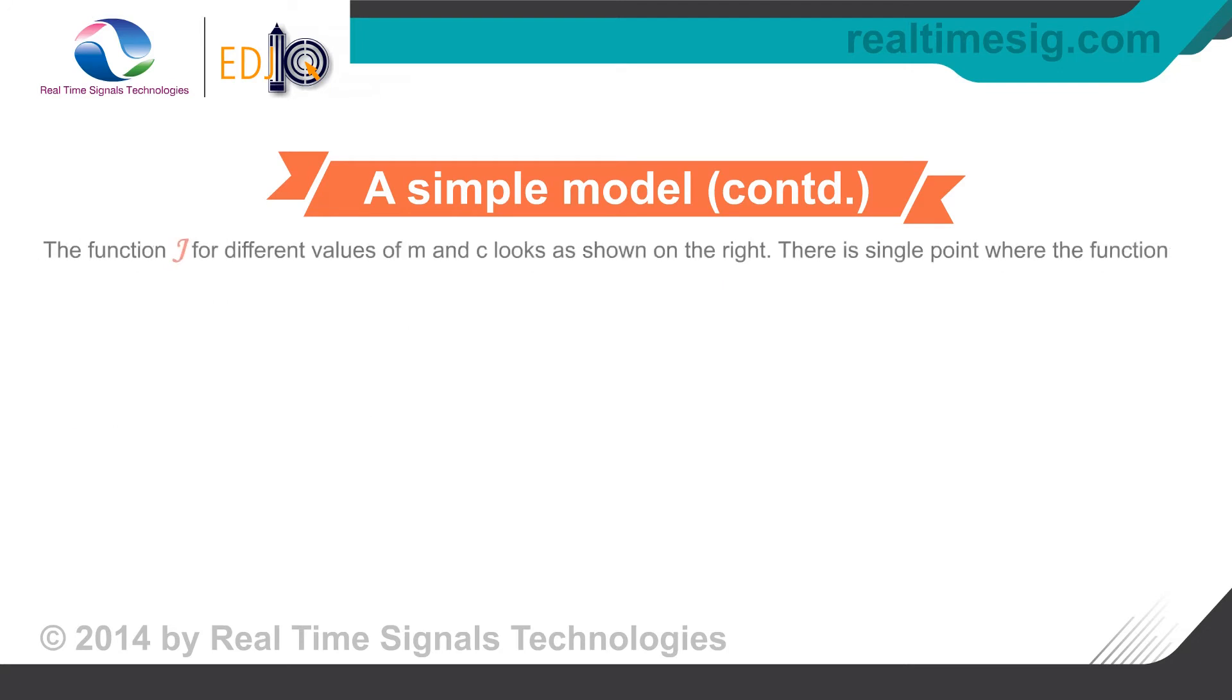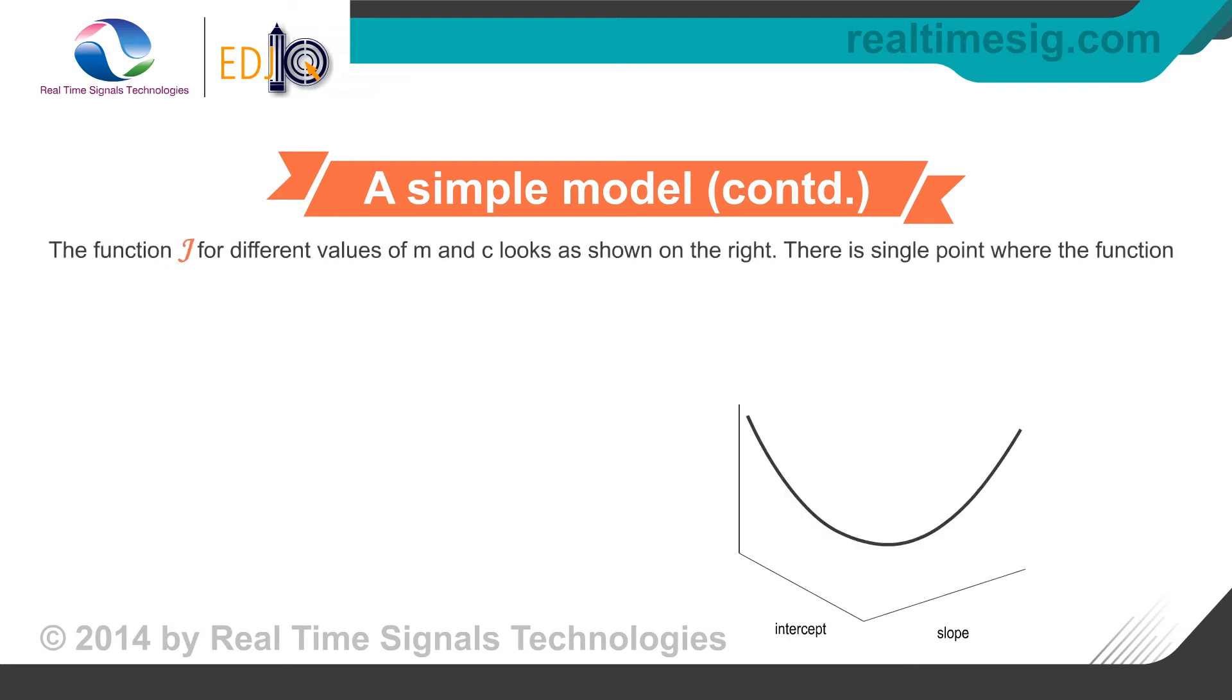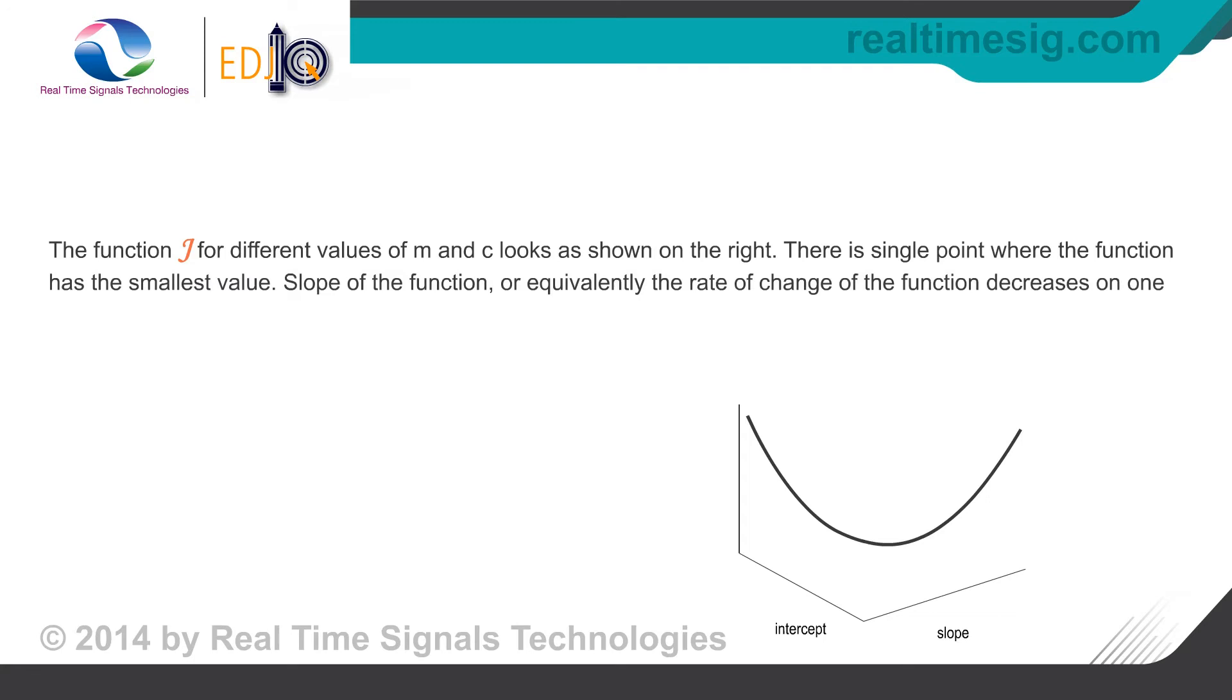The cost function for different values of m and c looks as shown on the right. There is a single point where the function has the smallest value. From the shape of the function, note that the slope of the function, or equivalently the rate of change of the function decreases on one side of the smallest value and increases on the other side.